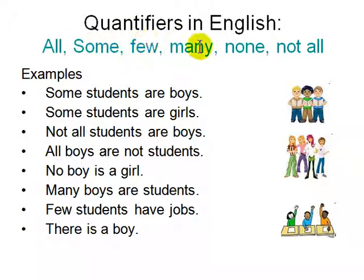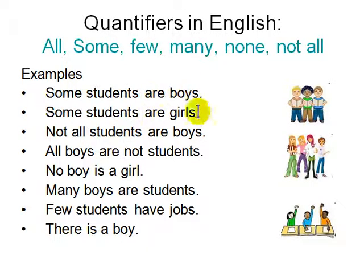In English: all, some, few, many, none, not all. Examples of quantifiers: Some students are boys. Some students are girls. Not all students are boys. No boy is a girl. Many boys are students. There is a boy. They are all examples of quantifiers, because notice there is no name — we haven't named anybody, but we have given some properties of people who are different kinds of students. There is no count also — just say some or all.